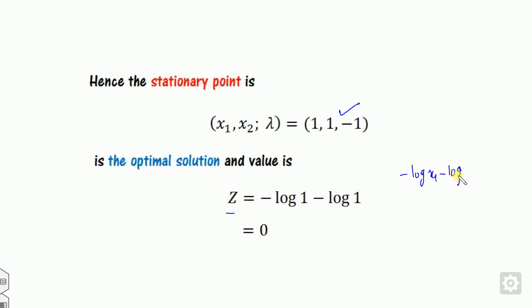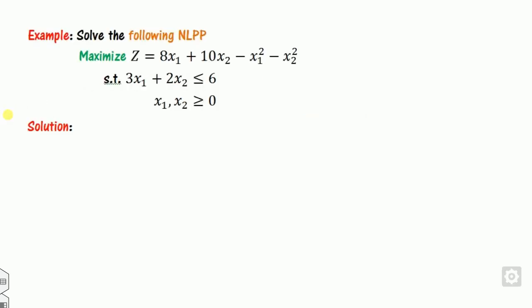Checking: x1 + x2 = 2, which satisfies all necessary conditions. The optimal solution is x1 = 1, x2 = 1 (wait — correcting: x2 = 2 per the transcript), λ = −1, and the minimum value of −log(x1) − log(x2) = 0.